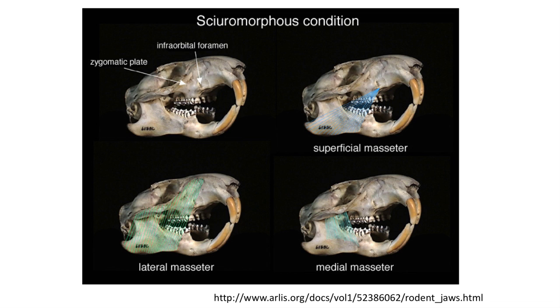Today this group is considered paraphyletic, and more likely polyphyletic. The next condition is the sciuromorphous condition, where the infraorbital foramen is small but there is a large groove or zygomatic plate on the anterior side of the zygomatic arch. Here the lateral masseter would insert from the dentary over this broad groove, while the superficial and medial masseter insert in the same regions as in the protrogomorphous condition. This group includes squirrels, beavers, geomyoids or pocket gophers, and heteromyoids or kangaroo rats. They can be recognized in the fossil record by this large, broad groove or zygomatic plate, if you just have a skull.